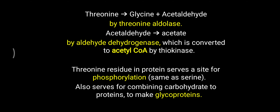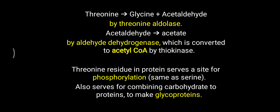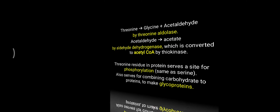Apart from phosphorylation, the hydroxyl group of threonine also serves as a site for attachment of carbohydrates to proteins, just like serine. This attachment of carbohydrate to protein forms glycoproteins. So the two most important significances of threonine in the body are phosphorylation and glycoprotein formation. Also remember: threonine is mostly glucogenic but can sometimes act as a ketogenic amino acid.